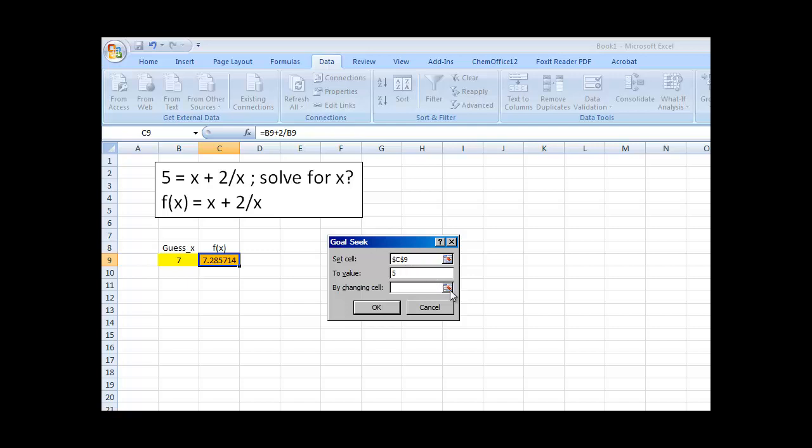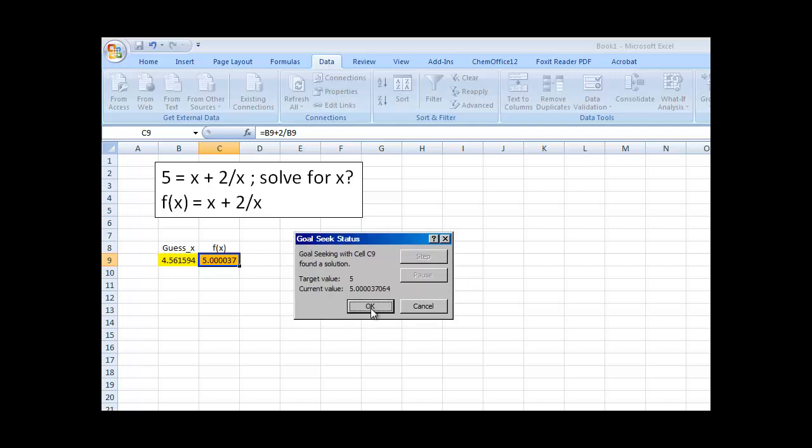That's the goal we're trying to seek. Well, how is it going to do that? It's going to change cell B9. So, what the Excel program is going to do is it's simply just going to keep changing B9 until c9 is equal to 5. In other words, it's going to keep changing our guess value for x until f of x is equal to 5. So, if I go ahead and click OK.